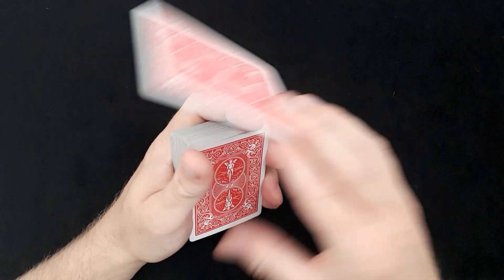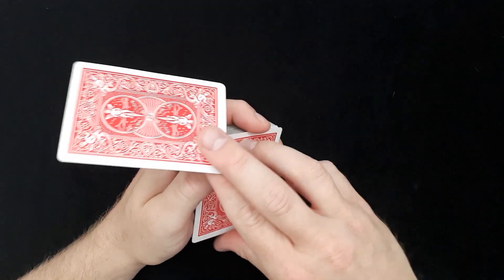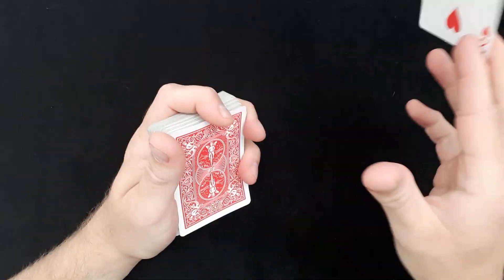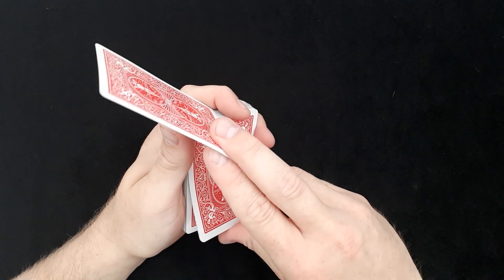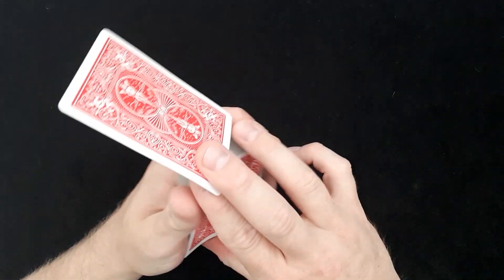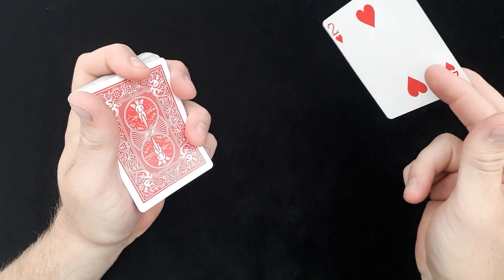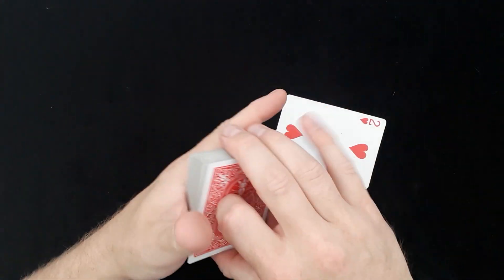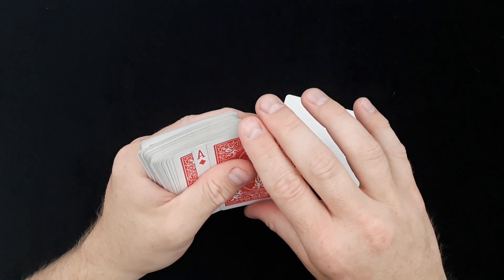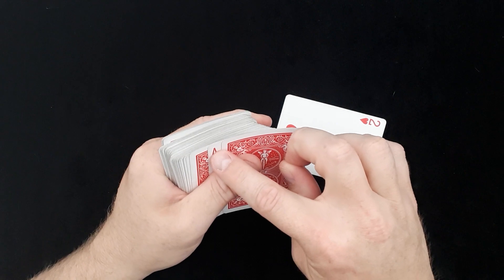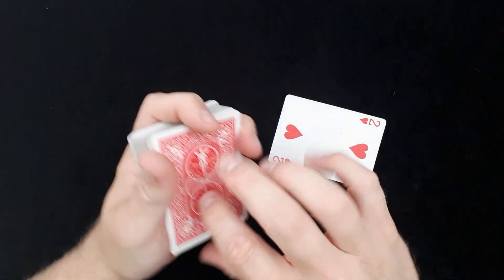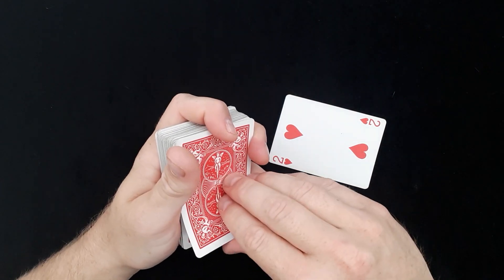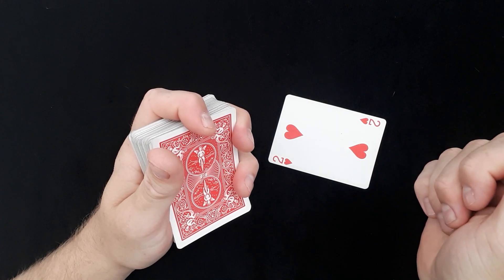When you've got the two, when you're showing the two, this is when you want to do the double lift. So you want to take two. Now the way I normally do it, you can just count up two and put a little pinky break in underneath the top two cards. It's quite straightforward. You don't really want to pull off because you'll see the second ace. So what I would suggest is just to count up two and then put the pinky break in there.